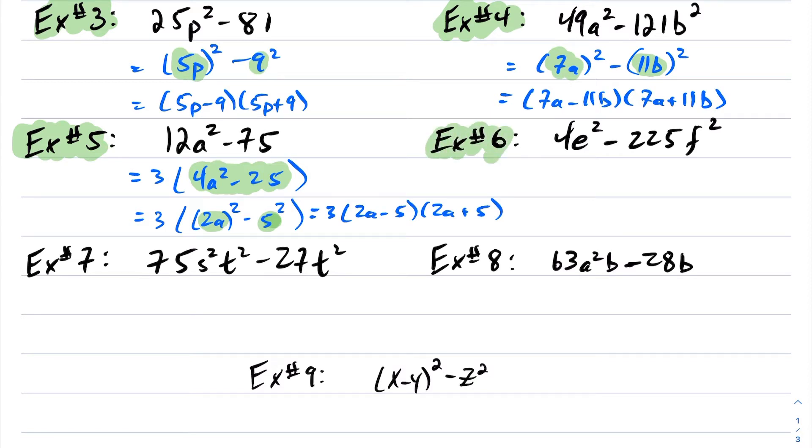All right, let's look at example 6. So here we have 4e² - 225f². So this will factor into (2e - 15f)(2e + 15f).